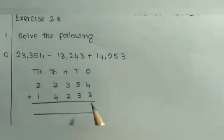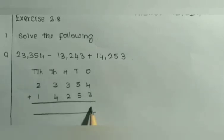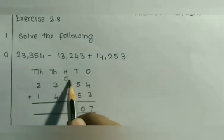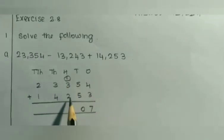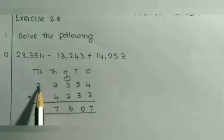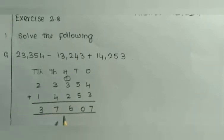Start adding from the 1's position: 4 plus 3 is 7. 5 plus 5 is 10 — 1 goes to the carry over. 3 plus 2 is 5, plus 1 carry is 6. 3 plus 4 is 7. 2 plus 1 is 3. Now we got the sum.